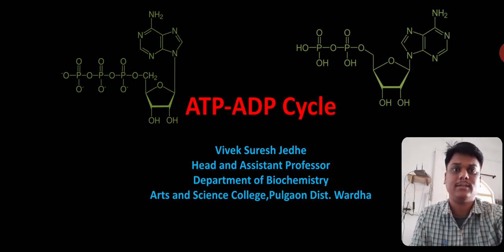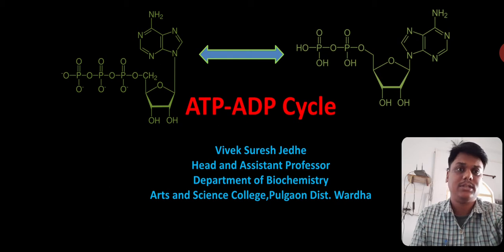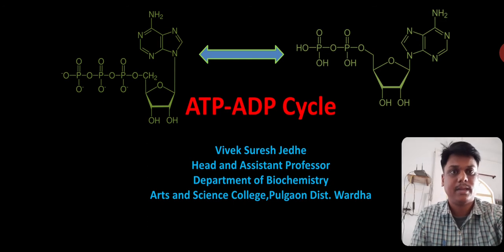So ATP is known as adenosine triphosphate, while ADP is known as adenosine diphosphate. They are interconvertible to each other. When phosphate is removed from ATP, it converts into ADP. And when phosphate is added to ADP structure, it is converted into ATP.